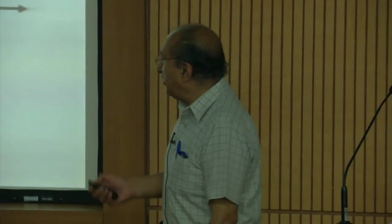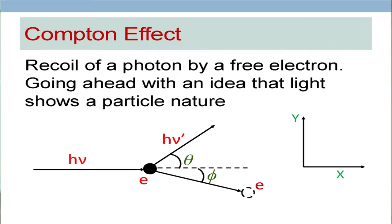If we can experimentally verify what we get from this, then we have understood that it is true that the photon carries momentum. Let us discuss the physics. We will conserve momentum — and because momentum is a vector quantity, each component must be separately conserved. Let us call this the x direction and this the y direction. The original momentum along x was only h-nu over c, because only the photon was carrying momentum and the electron was at rest.